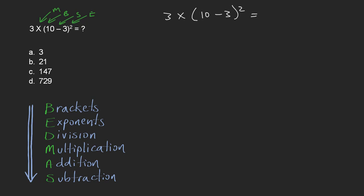So the first thing we have to deal with are the brackets. And inside of the brackets you can see that we have subtraction, so they get bumped up. So we're looking at 3 multiplied by 10 minus 3. So 10 minus 3 is 7.